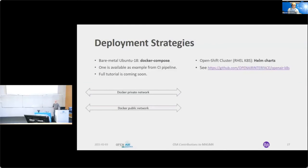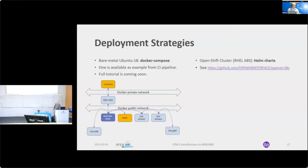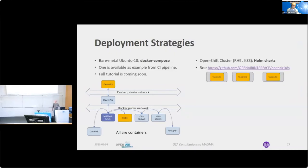Looking at the Docker Compose approach, we are using two Docker private networks. We deploy Cassandra with HSS, then a Redis container with the Magma container, then the OAI SPGatewayC and SPGatewayU, and then the E-NodeB and G-NodeB — everything is containers.